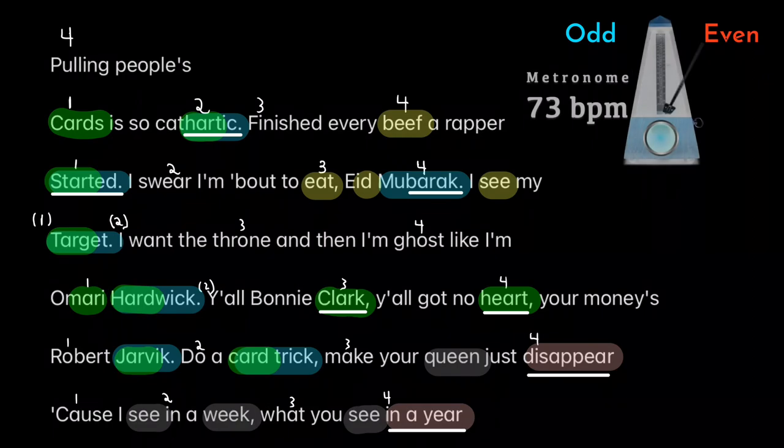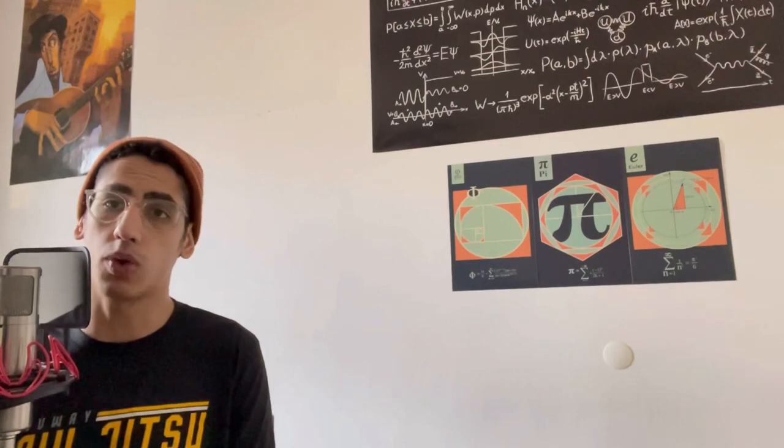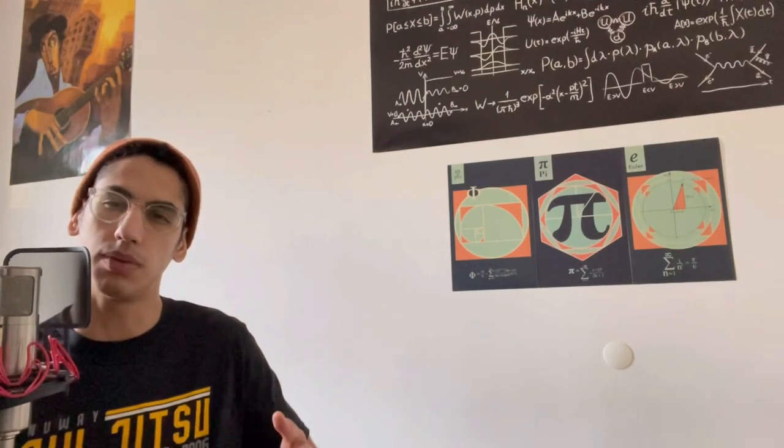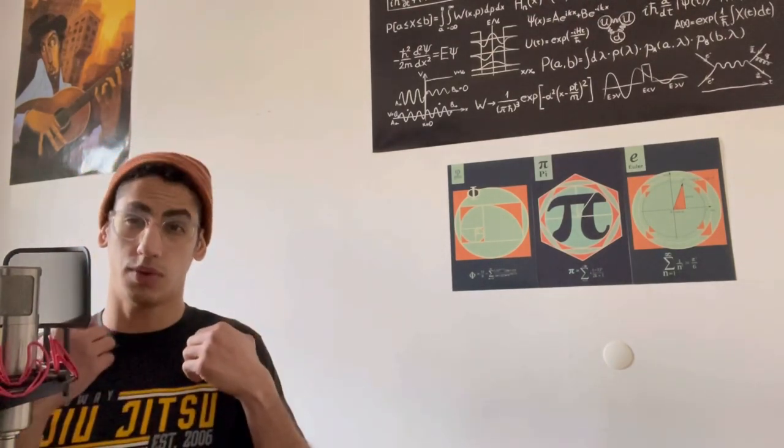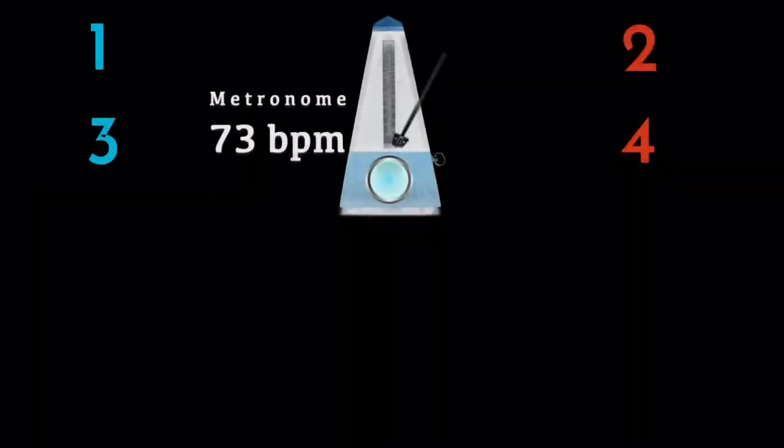But here's one thing that I want you to notice. Notice how there's a lot of rhymes that don't land on a particular beat. For instance, Hardwick, Jarvik, Kartrick, Queen, Week C. The words that don't necessarily fall on the beat, which makes us think that Russ is not thinking in terms of a four count.